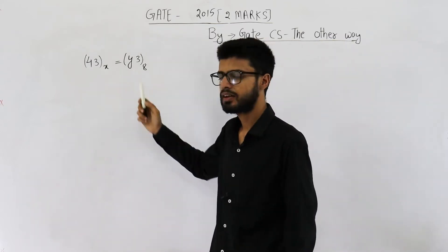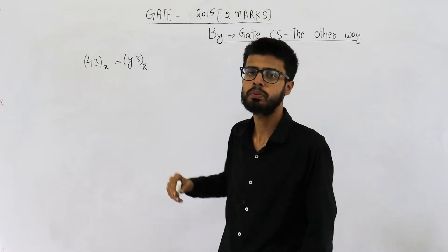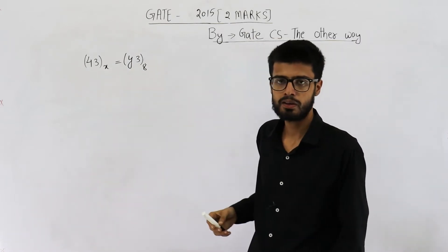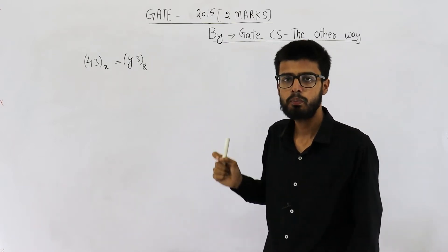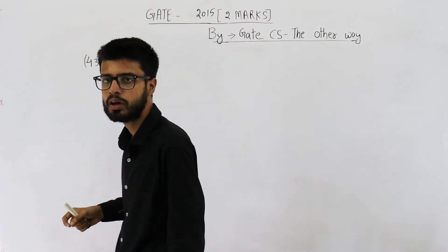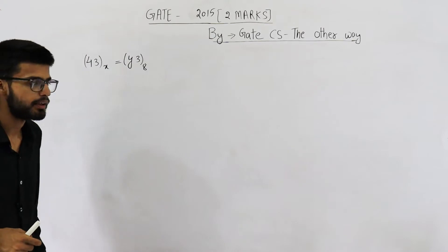This question is from GATE 2015 exam. They are saying if this equation is true, that means if 43 in some number system whose base is x is equal to y3 in octal number system, what is the total number of possible solutions of this equation? So we need to determine what is the total number of values that x comma y can take.